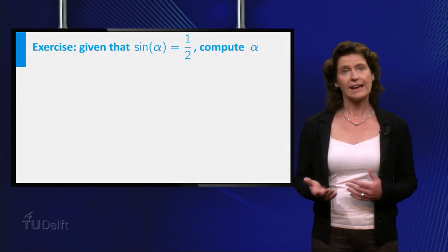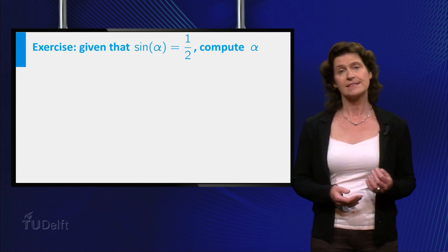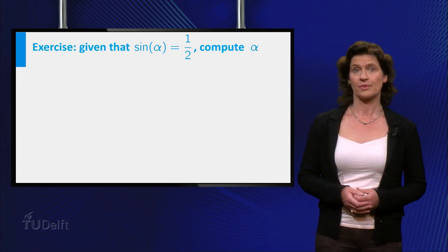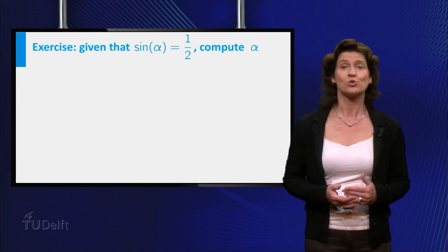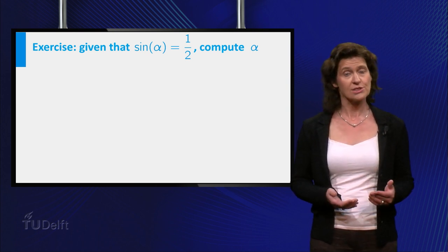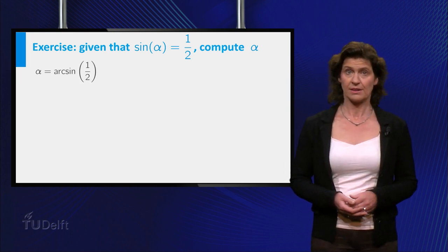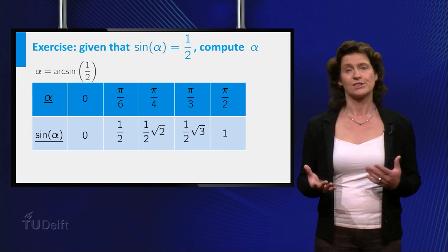When you compute angles by using inverse trigonometric functions, you have to take the corresponding domains and ranges into account. Here is an example. What is alpha if the sine of alpha is equal to 1 half? In other words, find the angle whose sine is equal to 1 half.